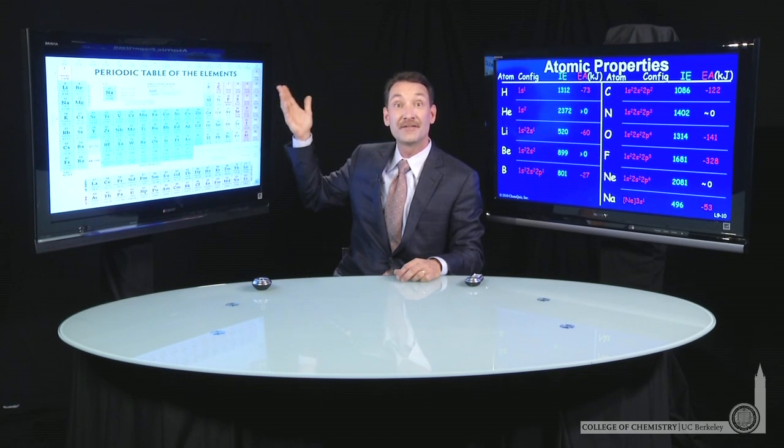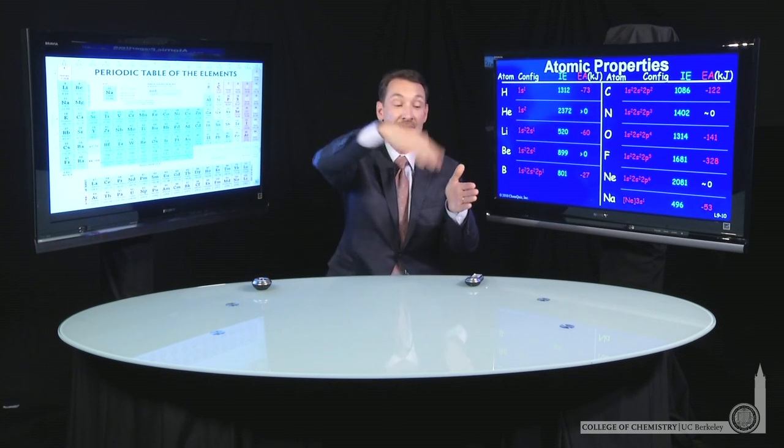Neon, at the edge of the periodic table, is in the noble gases — a relatively unreactive element — and it's so unreactive it won't even pick up free electrons. Nitrogen has a half-filled P orbital, which is relatively stable with three parallel spins. When it accepts another electron, that electron has to go in anti-parallel and spin pair with one of the electrons there, and that's just enough perturbation to make that electron affinity not so favorable.